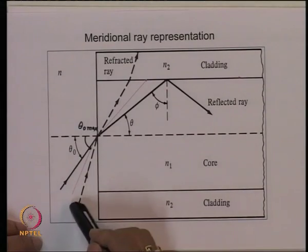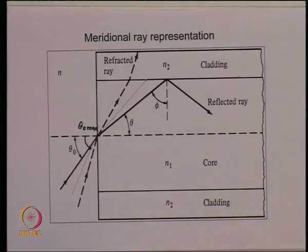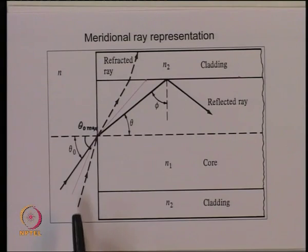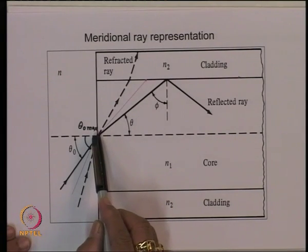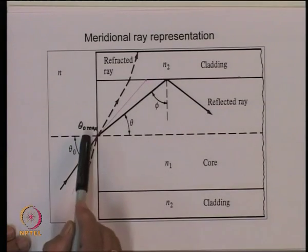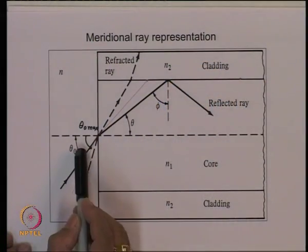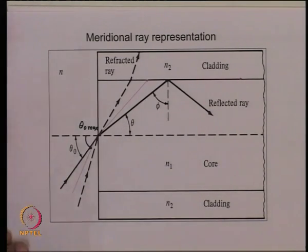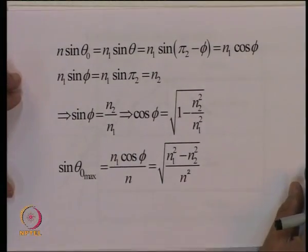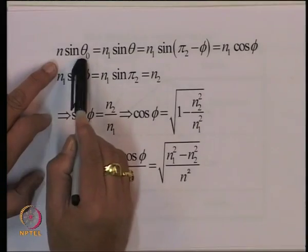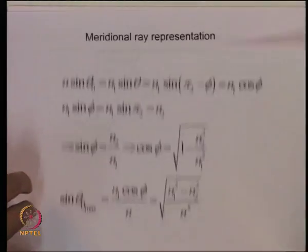All rays beyond the red line will get refracted and the power will leak out. Applying Snell's law at the two boundaries, we can find the value of θ0_max in terms of the core and cladding refractive indices. At the first boundary: N sin θ0 = N1 sin θ. The angle φ at the core-cladding boundary is 90° minus θ, so we can write N1 sin θ = N1 cos φ.